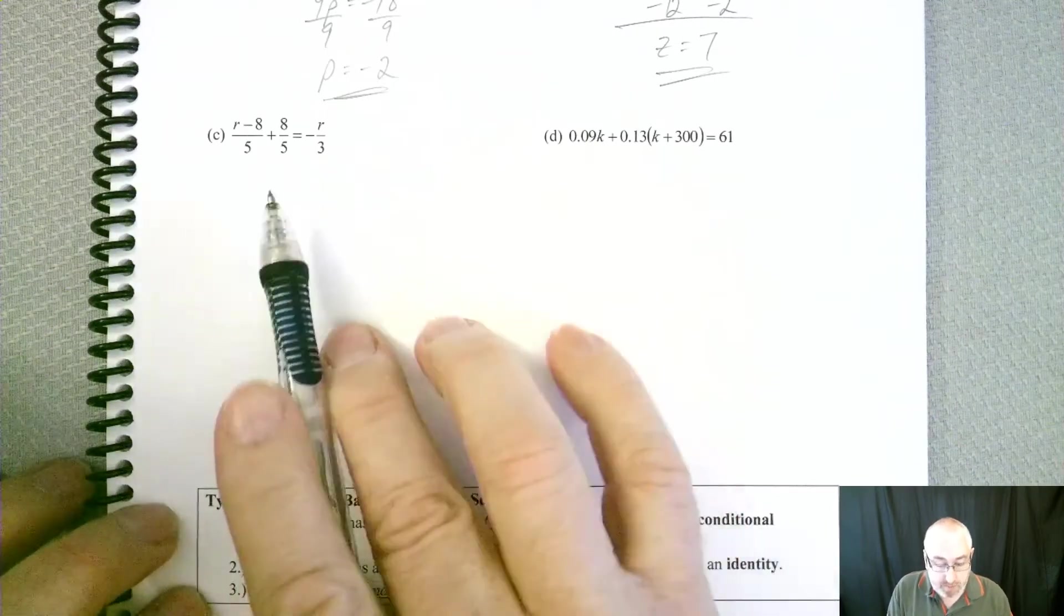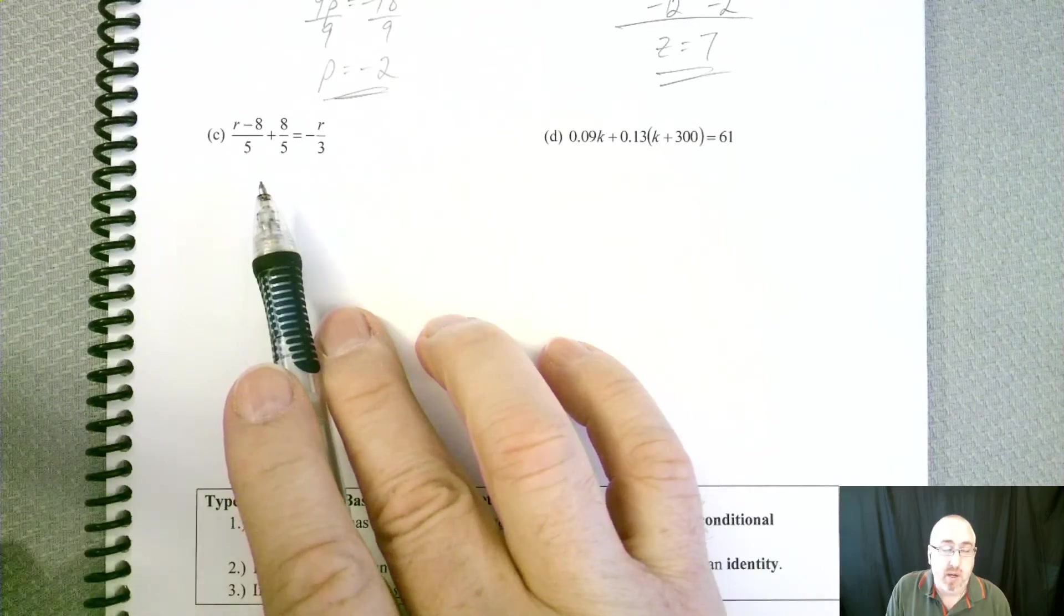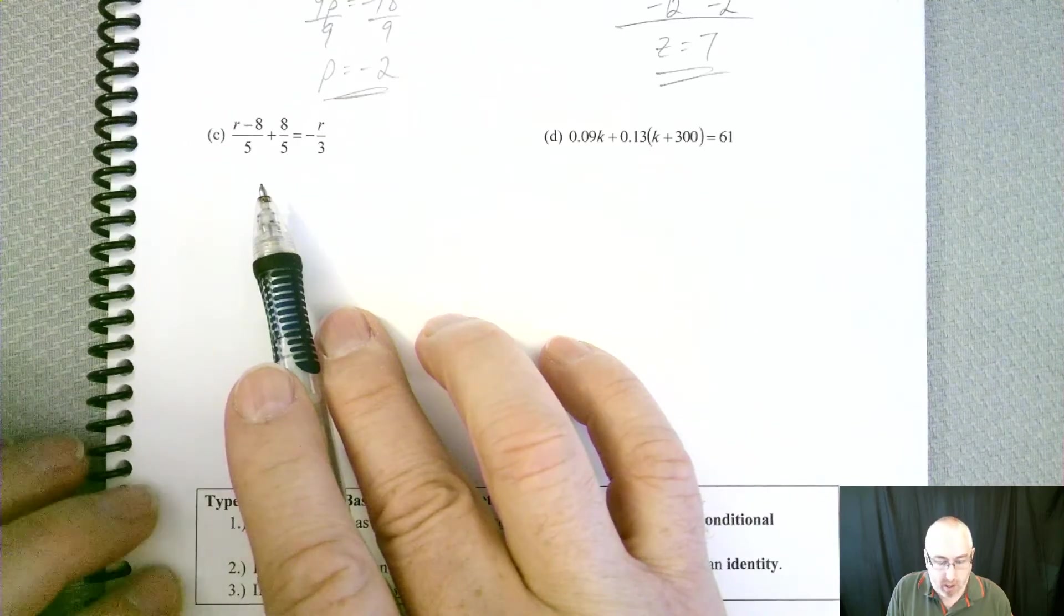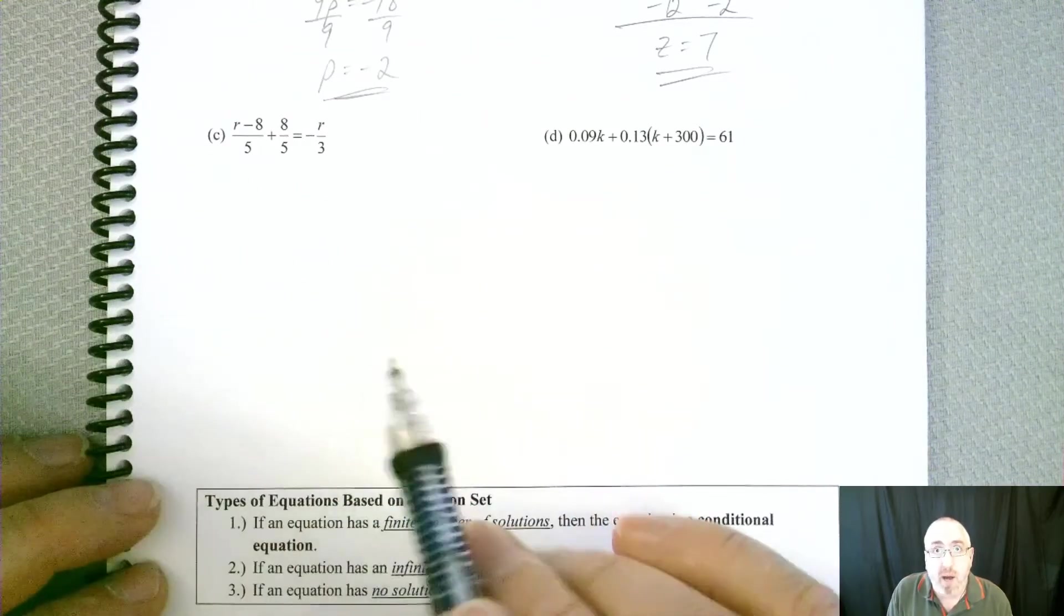So the first one has got fractions in it, which again, fractions are not everybody's favorite, so here's what I would recommend. Now the process in the book says to multiply by the LCD.